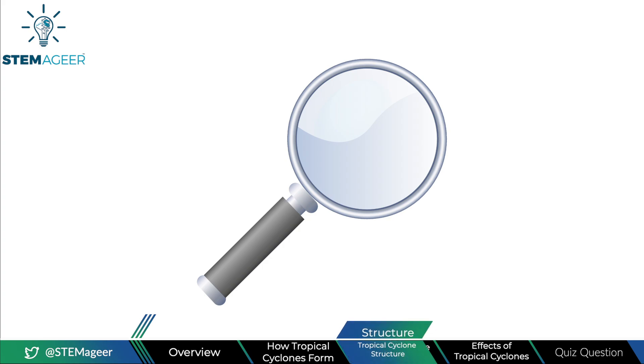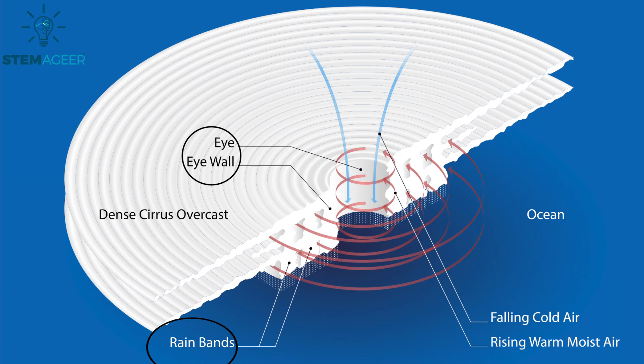Now let's take a closer look at the parts of a tropical cyclone. There are three main parts: the eye, the eye wall, and the rain bands. The eye is the center of the storm and the calmest part. The eye wall is the area immediately surrounding the eye — it has extremely tall clouds and is the most dangerous part, containing the strongest winds and heaviest rain. Finally, the rain bands are groups of cumulus clouds that create a spiral pattern surrounding the eye, producing a lot of rain, and sometimes tornadoes form there too.